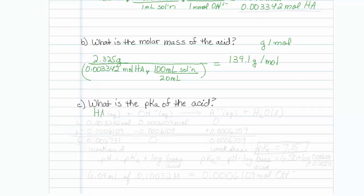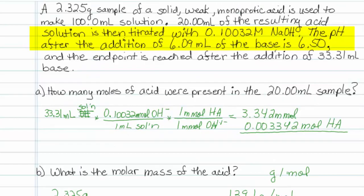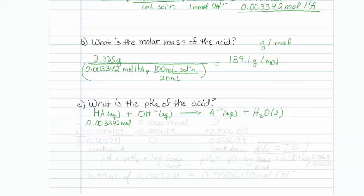I have a weak acid. I am going to add hydroxide. My reaction is going to slam to the right to make conjugate base and water. I know from my first part that I have 0.003342 moles of acid. When the pH is measured, right here,